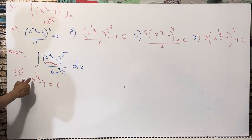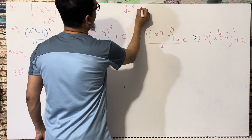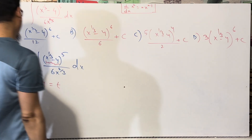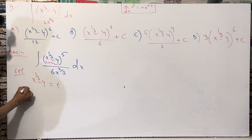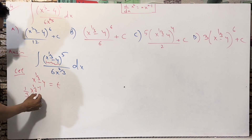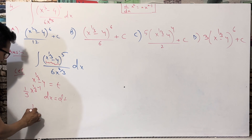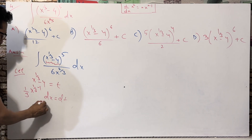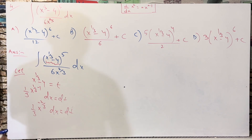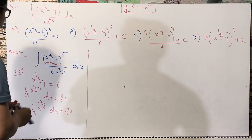We use the derivative formula: d/dx of x^n equals n·x^(n−1). So differentiating x^(1/3) minus 4 with respect to x gives (1/3)·x^(1/3 − 1), and the derivative of the constant is 0. This gives (1/3)·x^(−2/3) dx = dt.